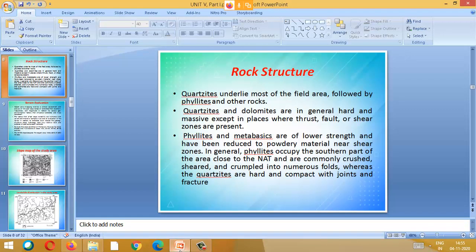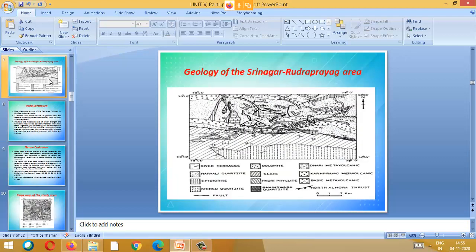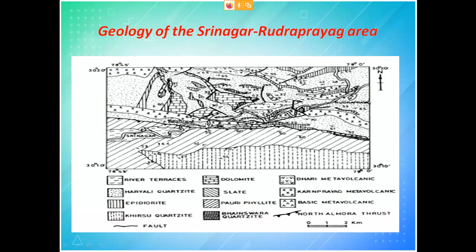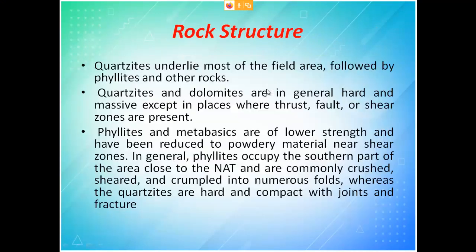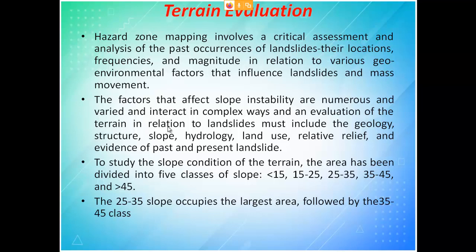We were discussing rock structures. Various rock structures play a major role. In the study region, there are two types of rocks that are relatively stronger, and several other types with low strength that get powdered and are more prone to landslides. Then we move to terrain evaluation, which covers the entire region. Hazard zone mapping involves critical assessment and analysis of past occurrences of landslides — their location, frequency, and magnitude — in relation to various geo-environmental factors.